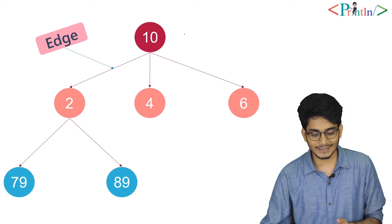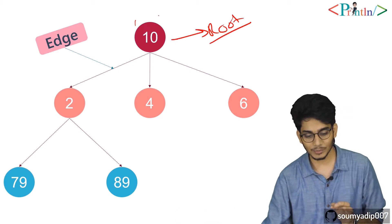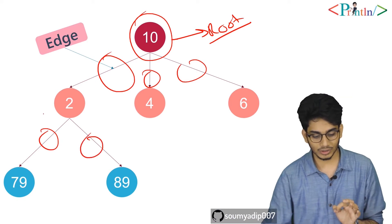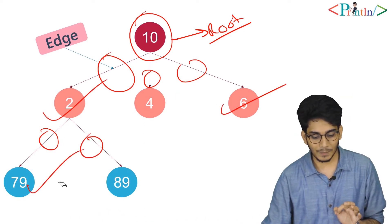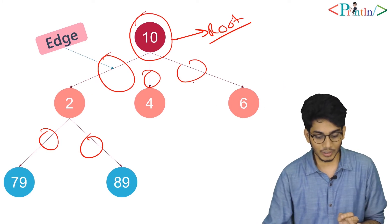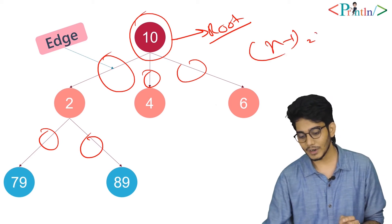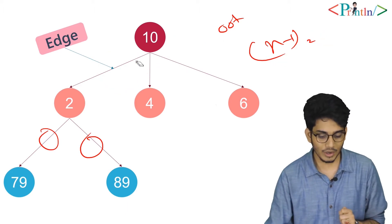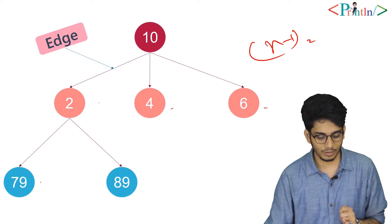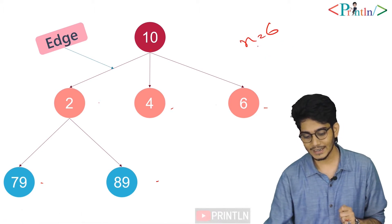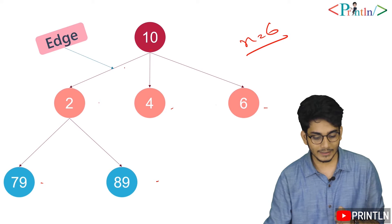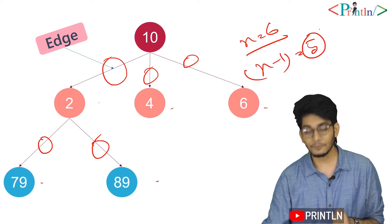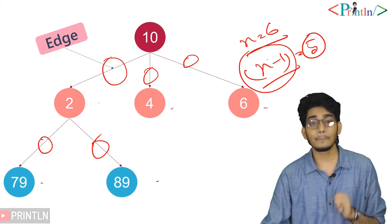Now what are edges? You can see that there are some paths between every node — each single line is called an edge. In a tree there will be n minus 1 edges, where n is the number of nodes. In this tree we have 6 nodes total, so we have n minus 1 equals 5 edges.